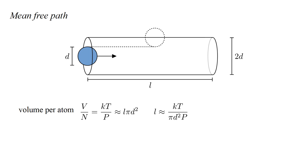Solving for L, we get KT over pi D squared P. Plugging in values, T equals 273.15 Kelvin, which is 0 degrees Celsius, standard atmospheric pressure, and an effective diameter of 3 times 10 to the minus 10 meters, or 3 angstroms. We find a mean free path of a bit more than 10 to the minus 7 meters, or 1 tenth of a micron.